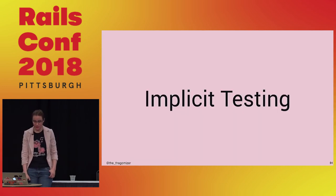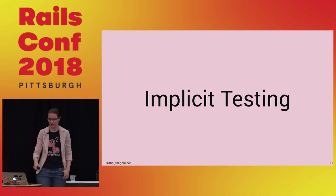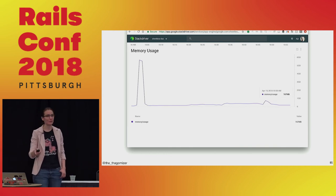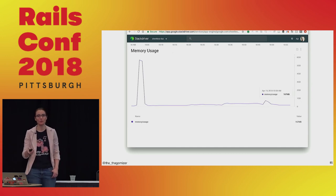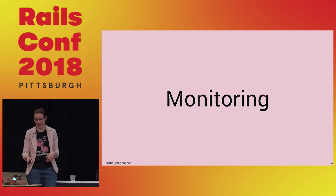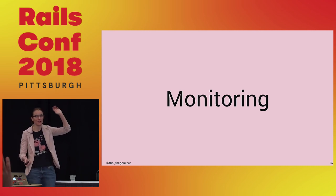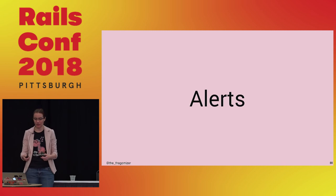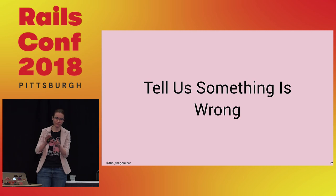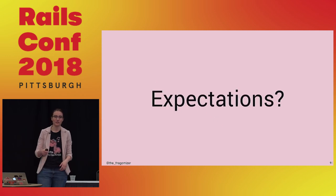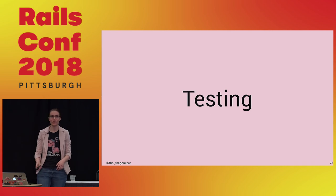Implicit testing — this last section is the testing you're all already doing but don't think of as testing. I'm talking about monitoring. Who's got monitoring? Who has alerts on their monitoring? Turns out alerts are tests. We think of alerts as the thing that tells us something is wrong, but they tell us the system isn't meeting expectations. Back at the beginning of this talk I defined testing as verifying that your expectations are met. So by definition, alerts are testing. Say I have an alert if latency is greater than 500 milliseconds — that's my test.